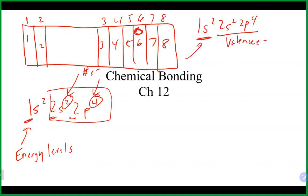The electrons lower in energy are referred to as core electrons. Because they're closer to the nucleus and held really tightly, they are not involved in bonding. So when we draw Lewis structures, it is only the valence electrons that are shown — elements do have core electrons, but we only show the valence electrons.